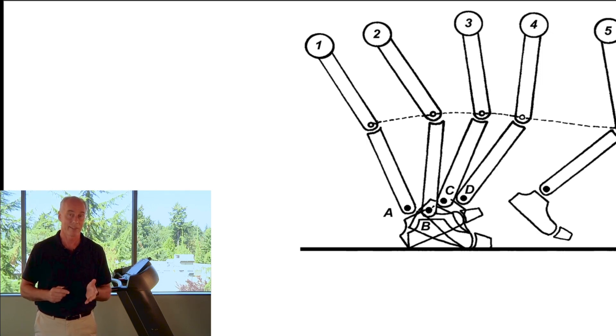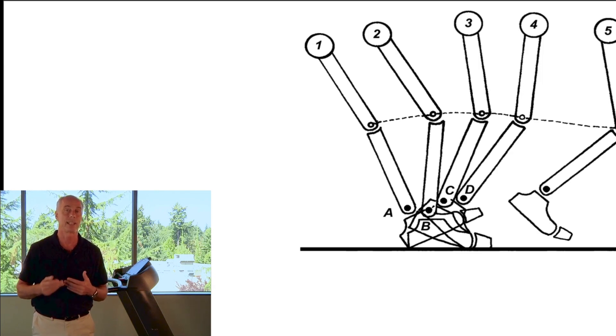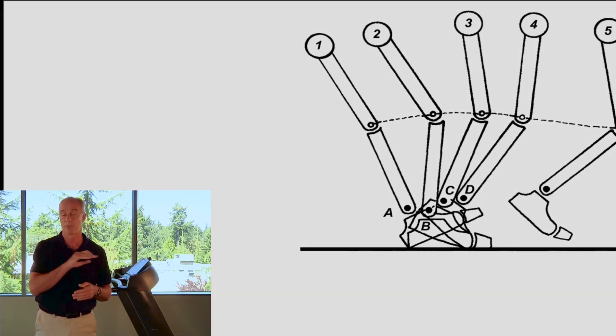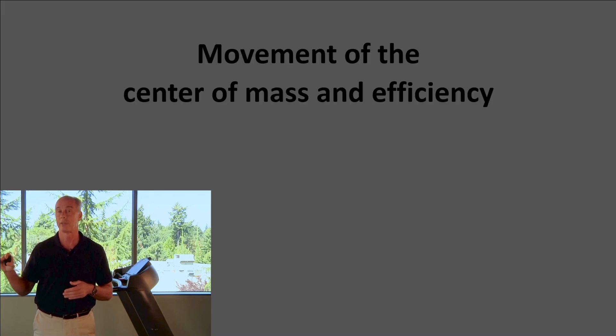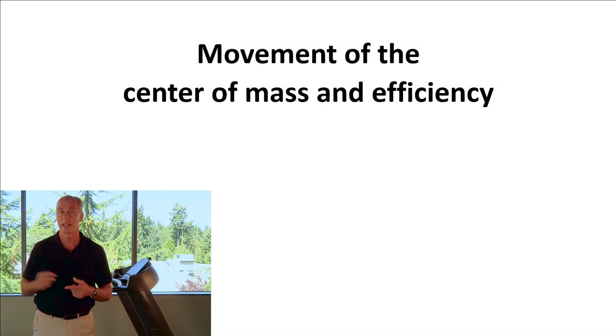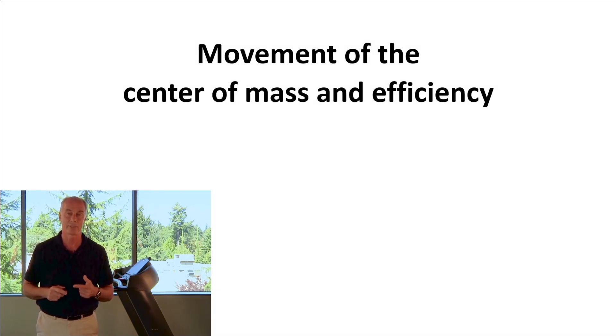Given everything just said, you would assume that the most efficient gait would be one with a perfectly flat center of mass. The classic example of that is Groucho running.